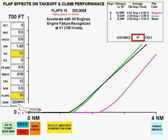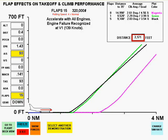On this flaps 5 takeoff, the ground run is slightly shorter, but the climb angle is not as good as flaps 1. This flaps 15 takeoff ground run is shorter than flaps 5, but with significantly less climb angle.